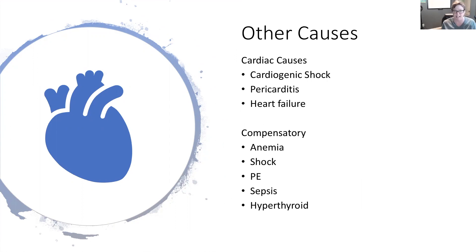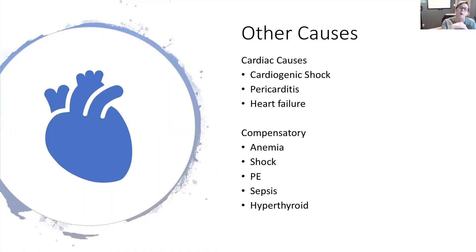Inflammation around the heart — pericarditis of the pericardial sac — and heart failure are also cardiac causes where the body cannot fully deliver nutrients and oxygen, so the heart compensates. Other compensatory causes include anemia, where insufficient red blood cells reduce hemoglobin and oxygen transport, prompting an increased heart rate. Pulmonary embolism causes an acute, rapid heart rate increase. Sepsis triggers increased heart rate to circulate what's needed to clear the infection. Hyperthyroid increases metabolism, raising heart rate — the opposite of the hypothyroid we saw in bradycardia.